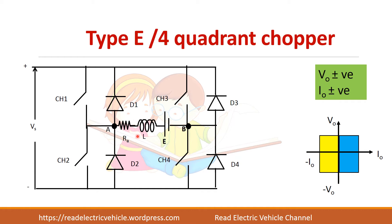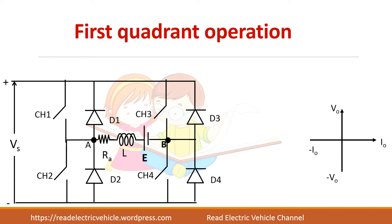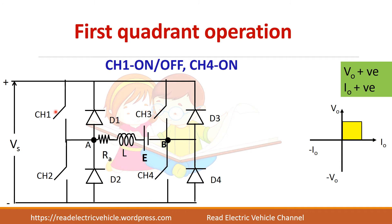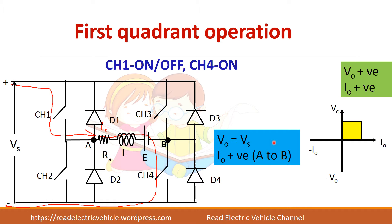The load — a DC motor — is connected between the two legs. This chopper can be made to operate individually in each of the four quadrants. For first quadrant operation, V0 and I0 should both be positive. CH1 and CH4 are turned on; point A is connected to plus Vs, so V0 equals Vs and I0 is positive because current flows from A to B.